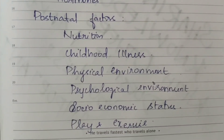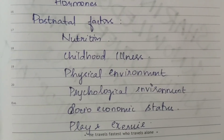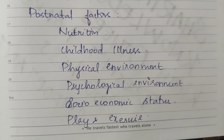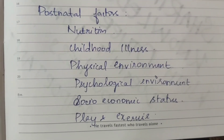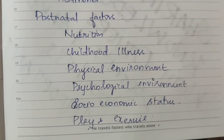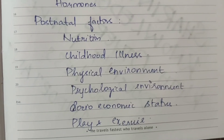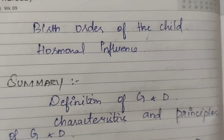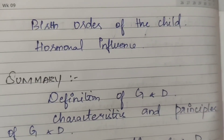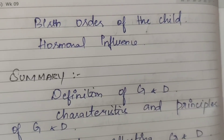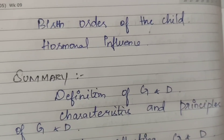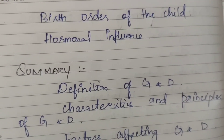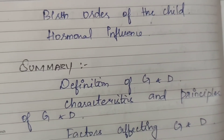Postnatal factors include: Nutrition, childhood illness, physical environment, psychological environment, and socioeconomic status. Play and exercise — play is an important thing for a child; the value of play and need of play is an important 5-mark topic. Birth order of the child is a major factor — for the fourth or fifth child, there may be low birth weight, genetic problems, and low immunization, so the baby's growth and development will be easily affected. Hormonal influence also plays a role.